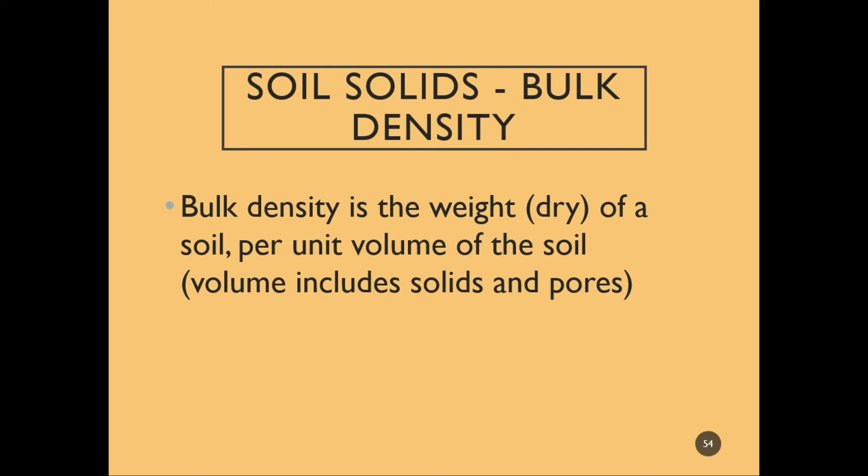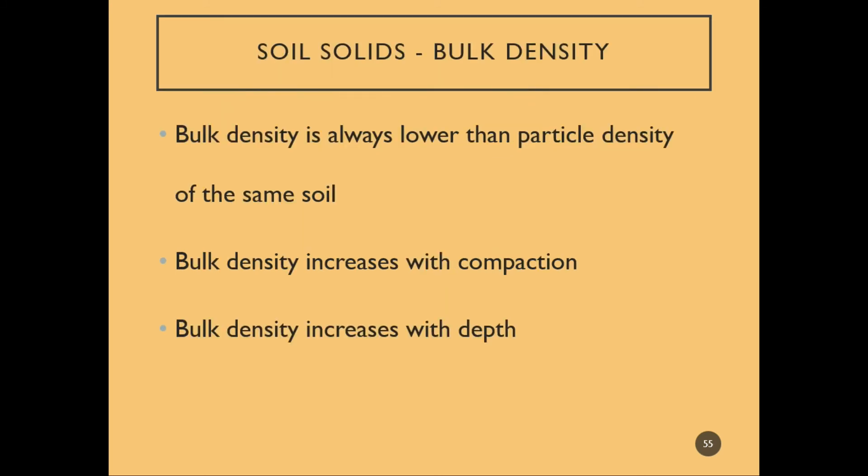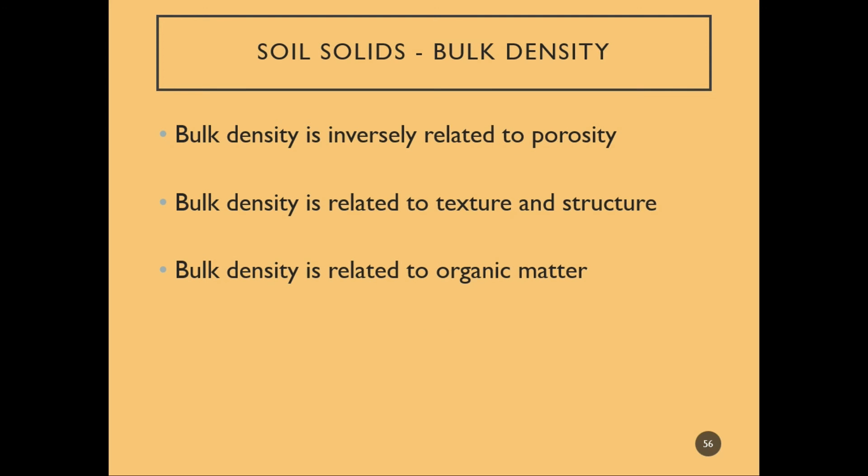Bulk density is the dry weight of soil per unit volume. It is always lower than particle density, and bulk density increases with compaction and generally with depth. It is inversely related to porosity — so as bulk density goes up, we have fewer pores and porosity goes down.